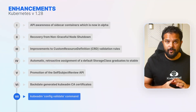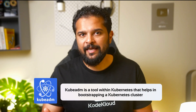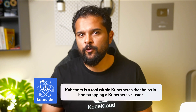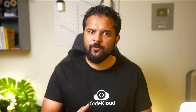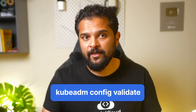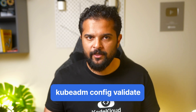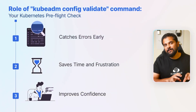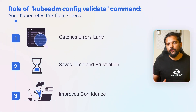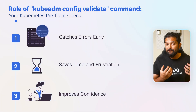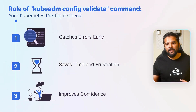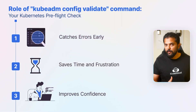The final item on our list is the kubeadm config validate command. Kubeadm is a tool within Kubernetes that helps in bootstrapping a Kubernetes cluster, and it relies on configuration files to know how to set up the cluster. These files can be intricate, and a small mistake in them can lead to problems down the line. The new kubeadm config validate command is like a pre-flight check for your Kubernetes configuration files — by validating configuration files before applying them, it helps catch mistakes early in the process.